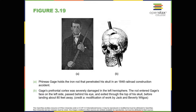Beyond the damage to the frontal lobe itself, subsequent investigations into the rod's path also identified probable damage to pathways between the frontal lobe and other brain structures, including the limbic system. With connections between the planning functions of the frontal lobe and the emotional processes of the limbic system severed, Gage had difficulty controlling his emotional impulses. However, there is some evidence suggesting that the dramatic changes in Gage's personality were exaggerated and embellished. Gage's case occurred in the midst of a 19th century debate over localization, regarding whether certain areas of the brain are associated with particular functions.